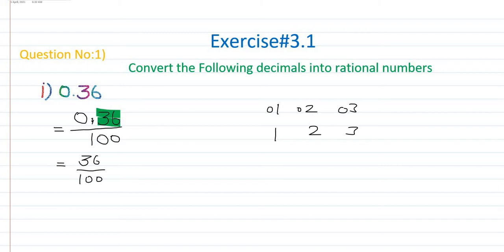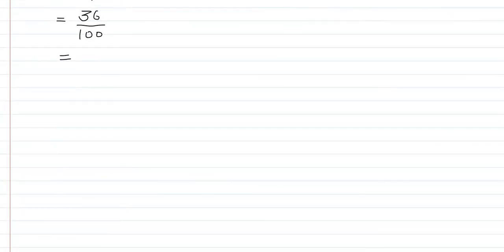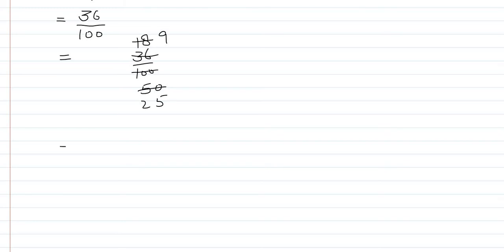Now we convert 36 over 100 into its lowest form. We divide both numerator and denominator by common factors. Dividing by 2 gives 18 over 50, then again by 2 gives 9 over 25. Since 9 and 25 share no common factors, 9 over 25 is the lowest form and that is the answer.